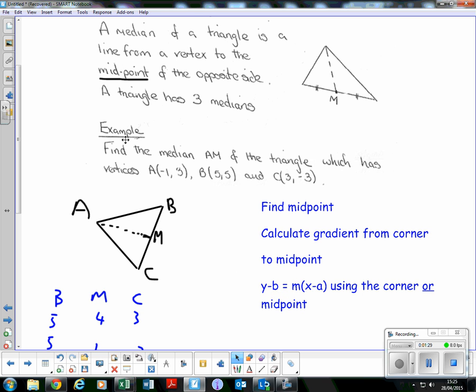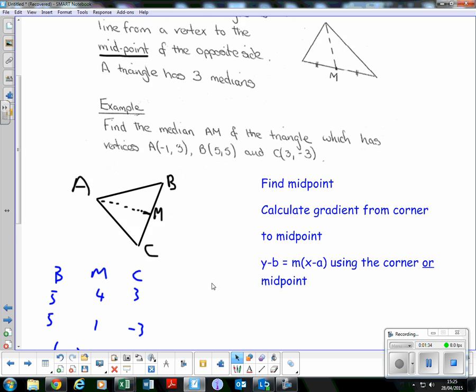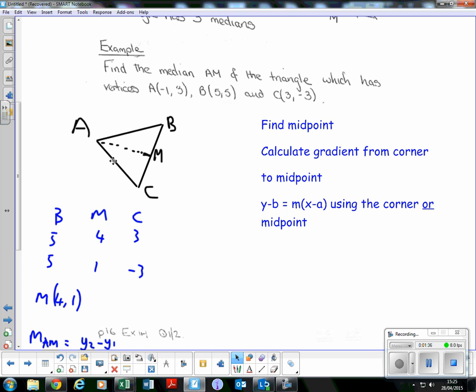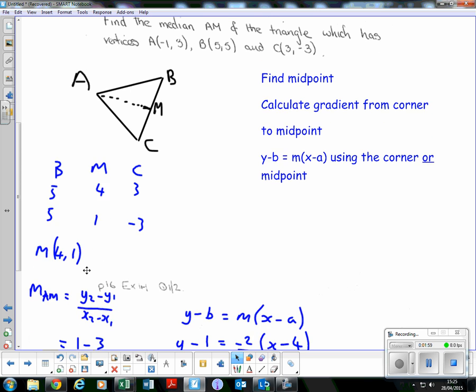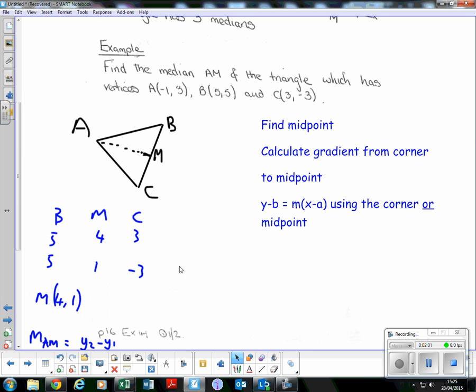Example: Find the median AM of the triangle which has vertices A(1,5), B(5,5), and C(3,-3). We need to find the midpoint. B has an x-coordinate of 5, C has an x-coordinate of 3, so the midpoint will have an x-coordinate of 4. B has a y-coordinate of 5 and C has a y-coordinate of -3, so the middle of that will be 1. The midpoint will have coordinates (4,1).